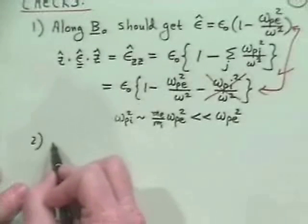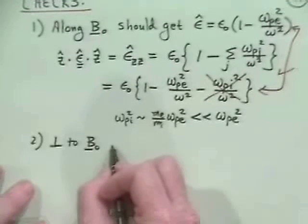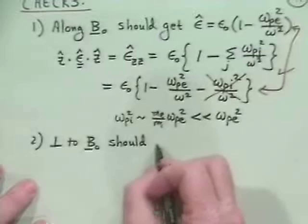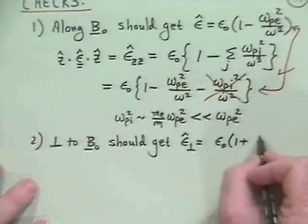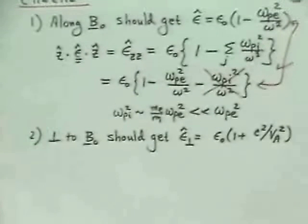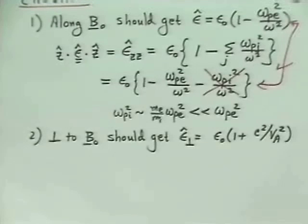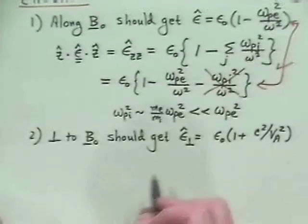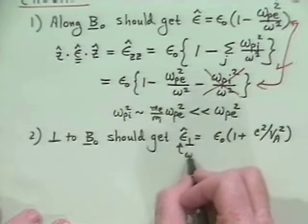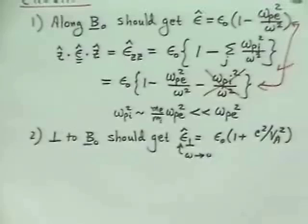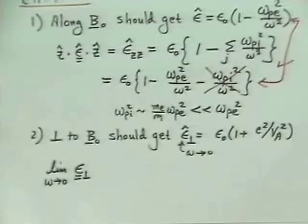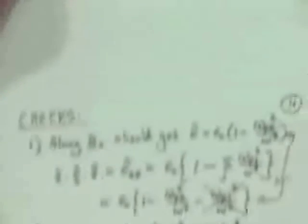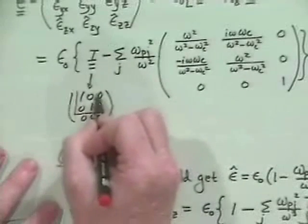Another check is that perpendicular to B, some time ago we derived that we should get the perpendicular dielectric constant equal to epsilon naught times 1 plus c squared over v_Alfvén squared. This came about because of the polarization drift. Now, the way we derived that is that this should be true in the limit as omega goes to 0, because we didn't take account of any cyclotron harmonic details when we did that. So what I would like to do is take the limit as omega goes to 0 of the perpendicular dielectric constant.